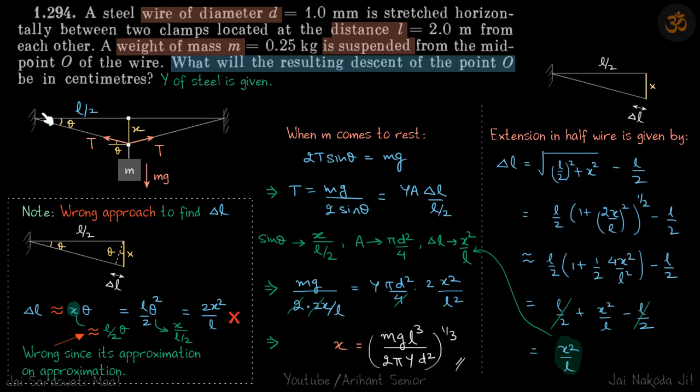We have a steel wire of length L, at the center of which we are hanging a mass M. After some time it will go to a maximum elongation and will stop. We need to find what will be the resultant descent of the point O. So we need to find what is this distance X.